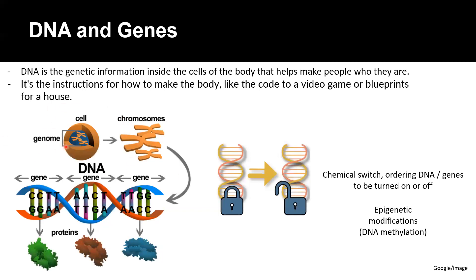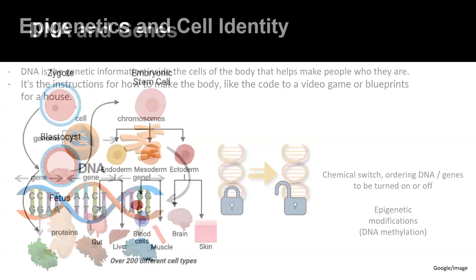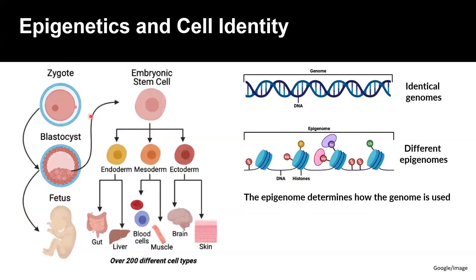DNA in the cells is the genetic material that you inherit from your mother and your father. The genes in your DNA determine things like your hair and eye color or how tall you are. There are switches that decide whether a gene is turned on or off in cells, and these are called epigenetic modifications. Following fertilization, early embryonic cells can specialize and differentiate into over 200 different cell types in the body. Each of these cell types have the same genome, but do not have the same epigenome.